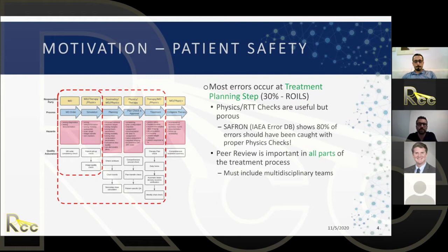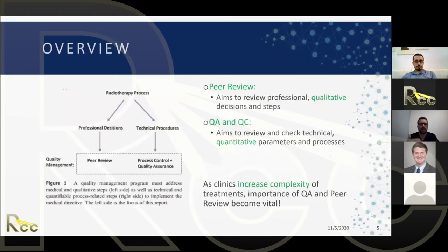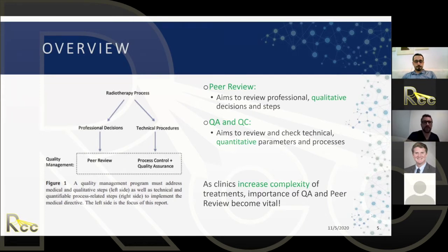Taking a step back, you can model the radiation therapy process into two bins. Peer review checks professional and qualitative decisions — things that don't have a simple yes or no answer, like clinical judgment calls. QA and QC, which physics does a lot of, covers the other side: technical pass/fail criteria.